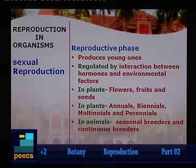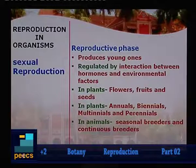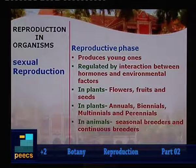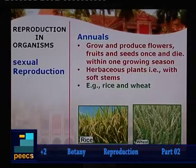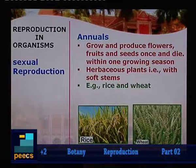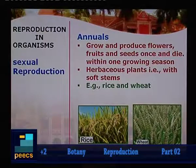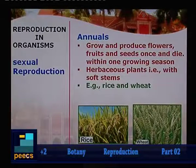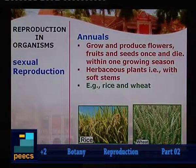In annual plants, all these components are produced. In animals, it varies between seasonal breeders and continuous breeders. Annuals are plants that complete their entire life cycle within a span of one year — they germinate from seeds, grow into a new plant, produce flowers, fruits and seeds and complete the life cycle. Examples include rice and wheat.